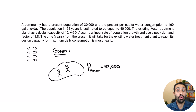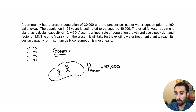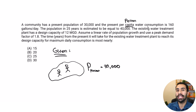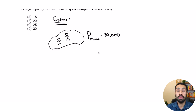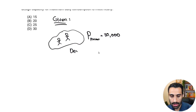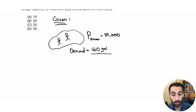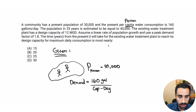Now we're told the present per capita water consumption is 160 gallons per day. Per capita means per person — 160 gallons per person per day, gallons per capita per day. So that's going to be the demand at present: 160 gallons per capita per day.